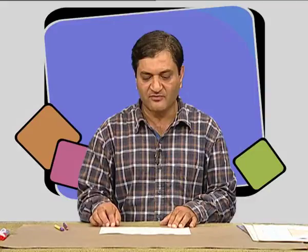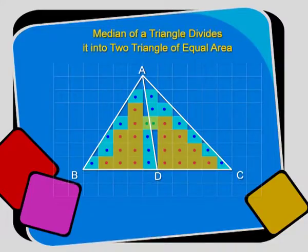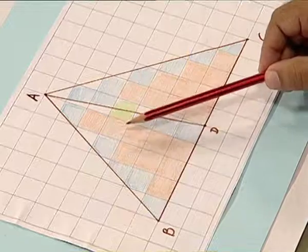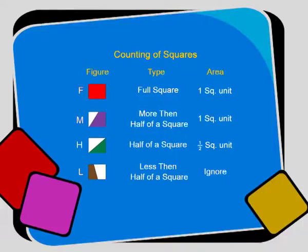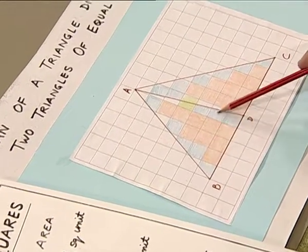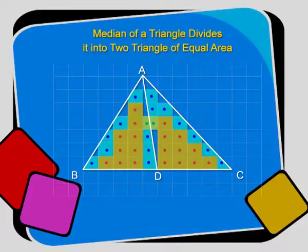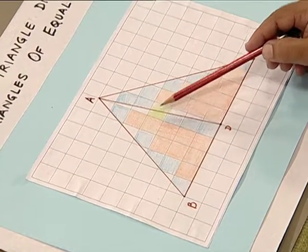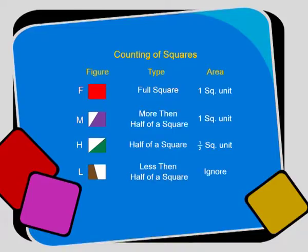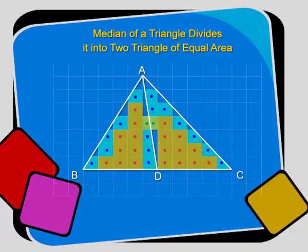Next we find the areas of these two triangles by counting the squares. A replica of the triangle we have just made is ready. Some squares inside the triangles are fully filled — the area of these squares is taken as one square unit. Some squares are more than half filled — the area of each of these is also taken as one square unit. Some squares are exactly half filled — the area of each is taken as half a square unit. The remaining squares are less than half filled, which we ignore.